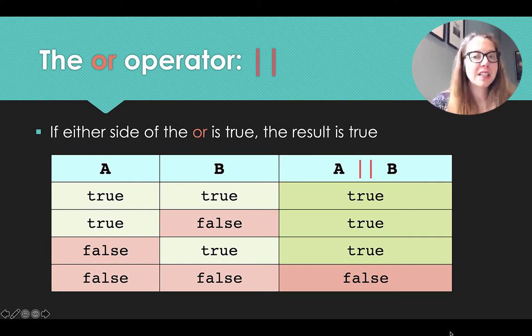If only one of two conditions is required to be true, then we use the OR operator. So here we see we have a condition A, a condition B, and we express A or B using those two vertical pipes. And in this situation, if either A or B is true, the result is true. So A being true, B being true, true. A true, B is false, no problem. A or B is still true. A false, B true, A or B is true. The only way that A or B fails this test is when both A and B are false.